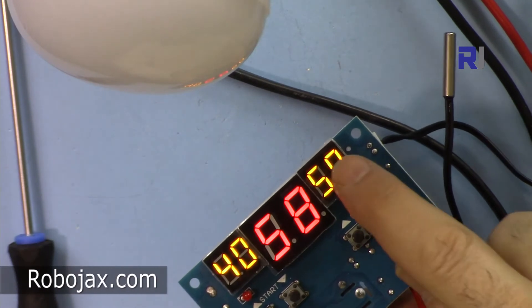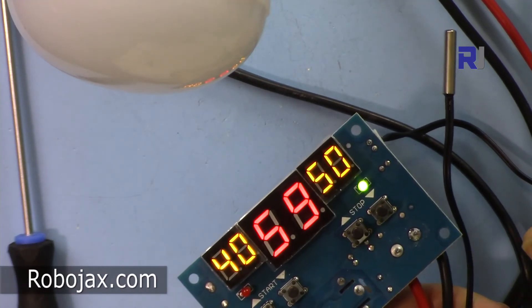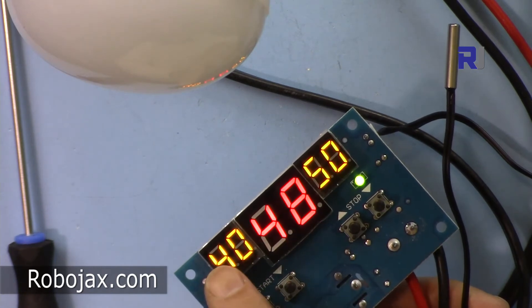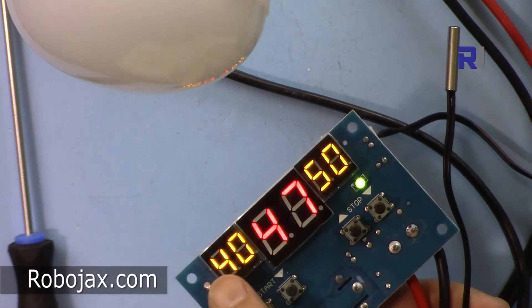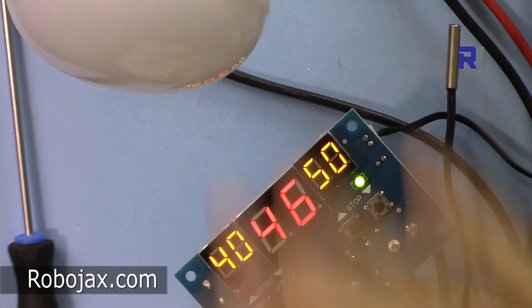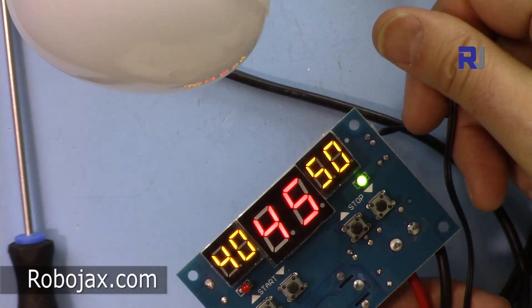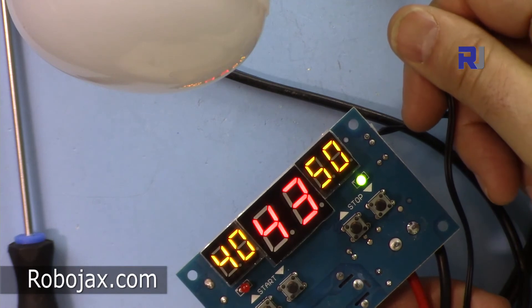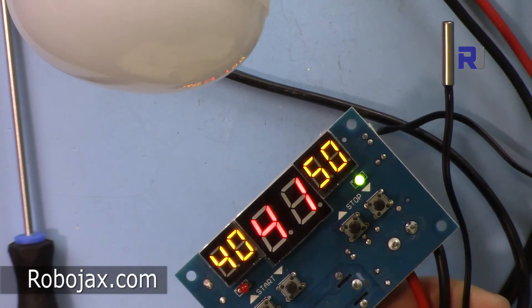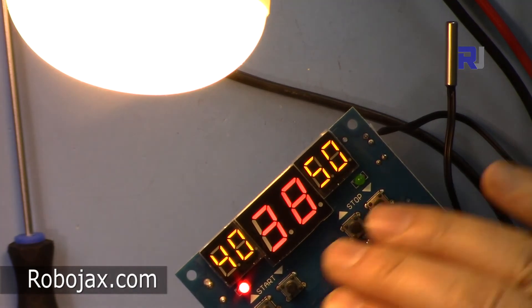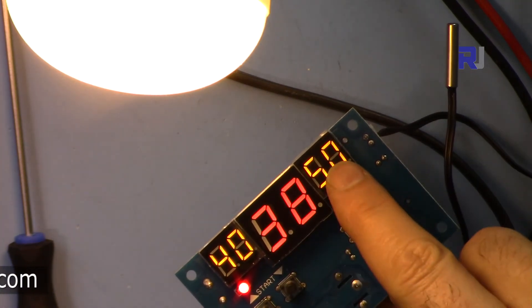Now it's at 50, it shut off. Now the temperature drops until it reaches 40. When it reaches 40 it means it's very cold, then the heater will turn on. Now the heater is turned on and it continues. When the temperature rises at 50 it will stop.